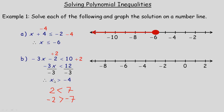So x is greater than negative 4. Notice there's no equal to here, so we don't shade in the negative 4 — we put an open circle there. Greater than means we shade towards the right, above negative 4. It doesn't include negative 4, but numbers to the right of it, for example, negative 3.99 is bigger than negative 4.